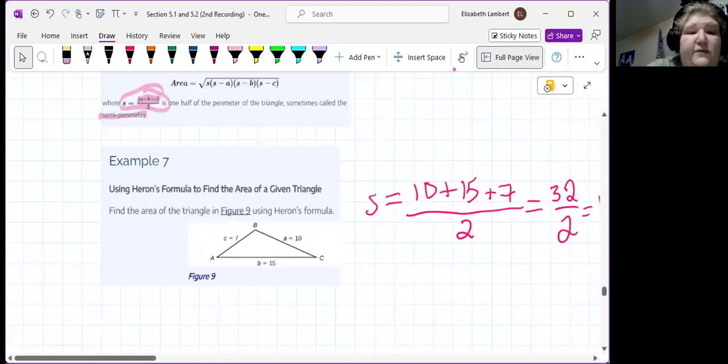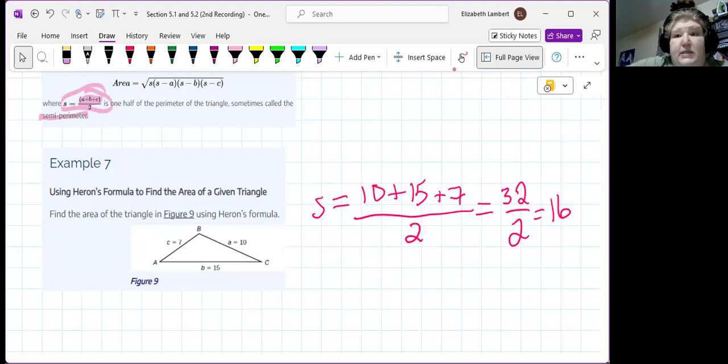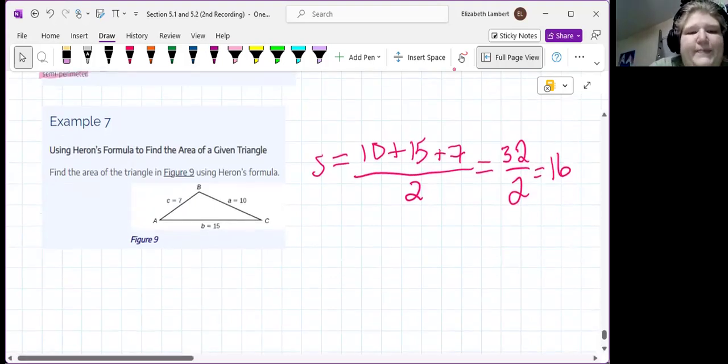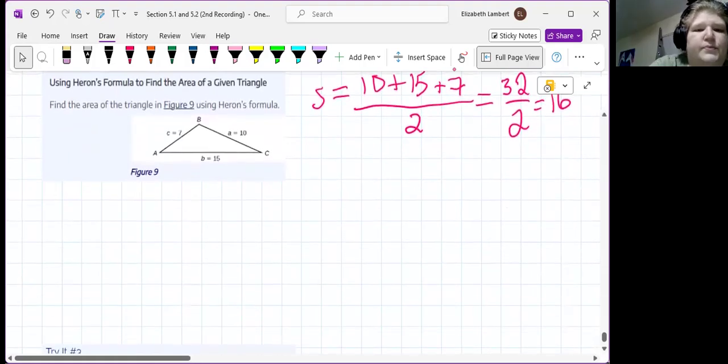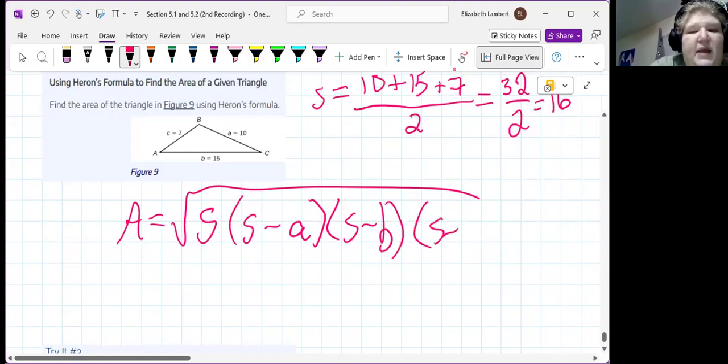All right, now the formula involves the square root, the semi-perimeter, and then the semi-perimeter minus each of the sides. So, the area is big ugly square root, S, S minus A, S minus B, S minus C.